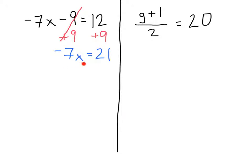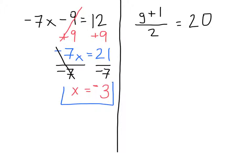We have negative 7 times x, so we're going to do the opposite of multiplication, which is division. We divide by negative 7 on both sides. The negative 7s cancel out and all we have left is x. Now we have 21 divided by negative 7. A positive divided by a negative is always going to be negative, so 21 divided by 7 equals 3, meaning x is equal to negative 3.